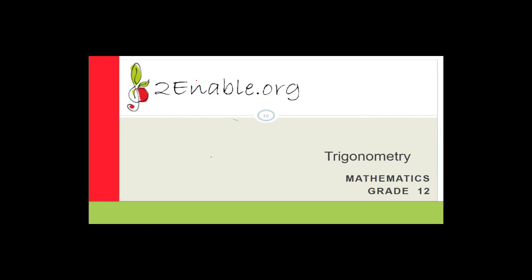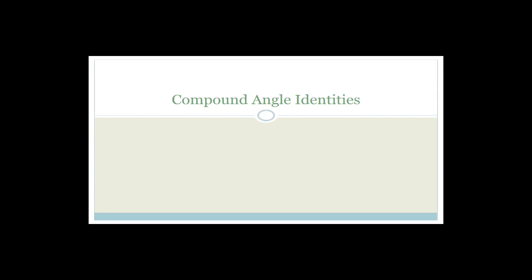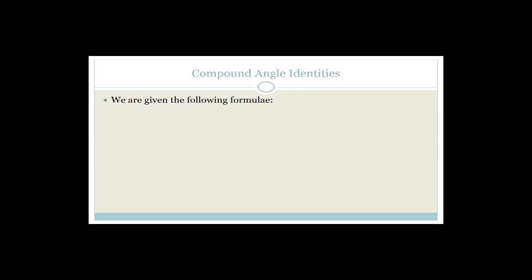Let's move on to our trigonometry. We're going to go on to compound angle identities and double angle identities. Compound angle identities are important because you're given the formula but they like to ask you to prove it, so we're going to go through it.